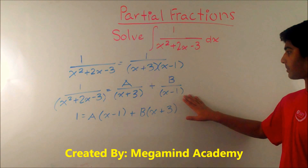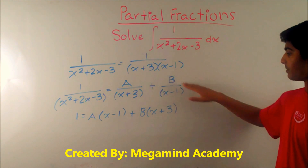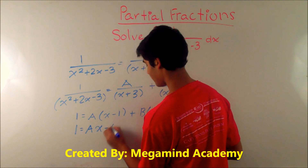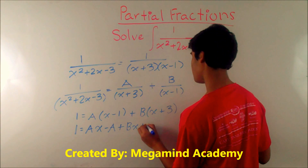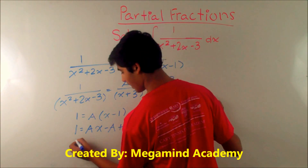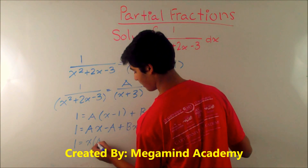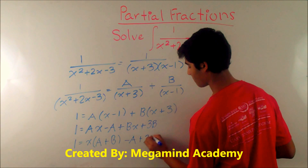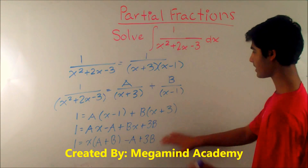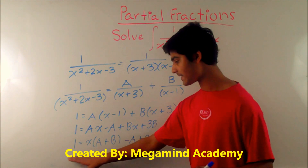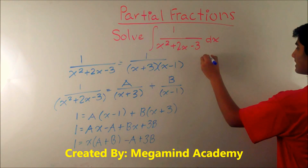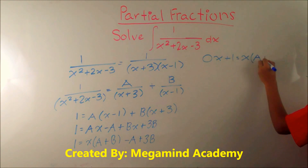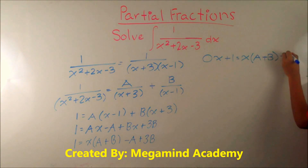In the case of the other term, x minus 1 and x minus 1 cancel out, leaving us with x plus 3 and B as our factors. Now let's expand this — we get 1 is equal to Ax minus A plus Bx plus 3B. Grouping together, we get 1 is equal to x times (A plus B) plus (negative A plus 3B). The left side is equal to 1, so we can also write it as 0x plus 1, which equals x times (A plus B) plus (negative A plus 3B).